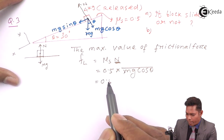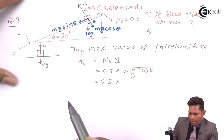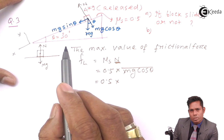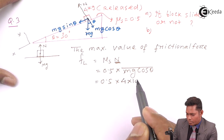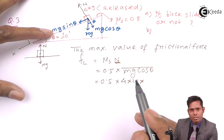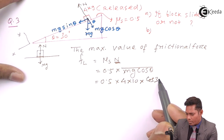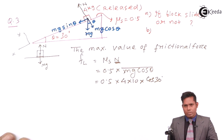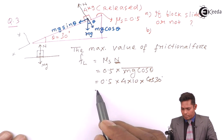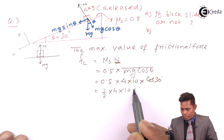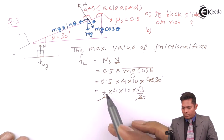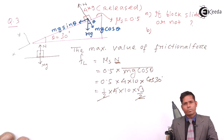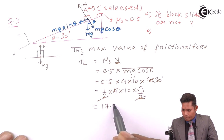Putting in the values, we get FL = 0.5 × 4 × 10 × cos 30°. mg is 4 × 10 = 40. Cos 30° is root 3 by 2. So FL = 0.5 × 40 × (root 3 / 2). The 2 cancels, giving 0.5 × 20 × root 3 = 10 × root 3. Since root 3 is 1.73, FL = 17.3 Newtons. So the maximum frictional force is 17.3 Newtons.